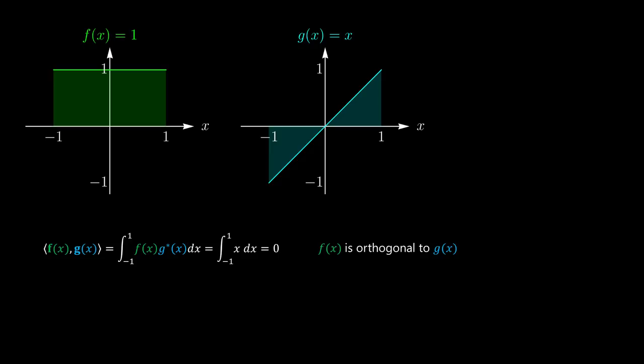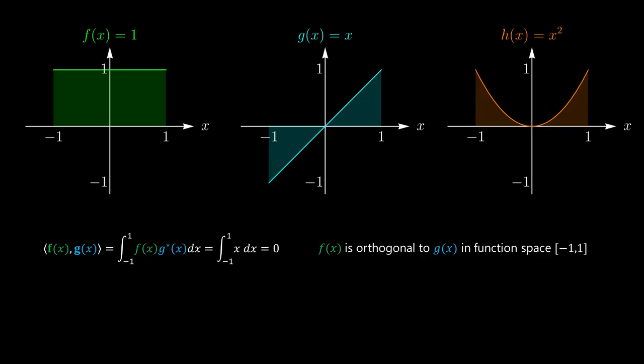Of course, this is true as long as we have defined this particular vector space, considering this interval -1 to 1, and using this particular definition of the inner product as this integral. What about f(x) = 1 and h(x) = x²? Are they orthogonal to each other? Let's do their inner product. In this case, the result is not 0, so the functions 1 and x² are not orthogonal to each other in this vector space.